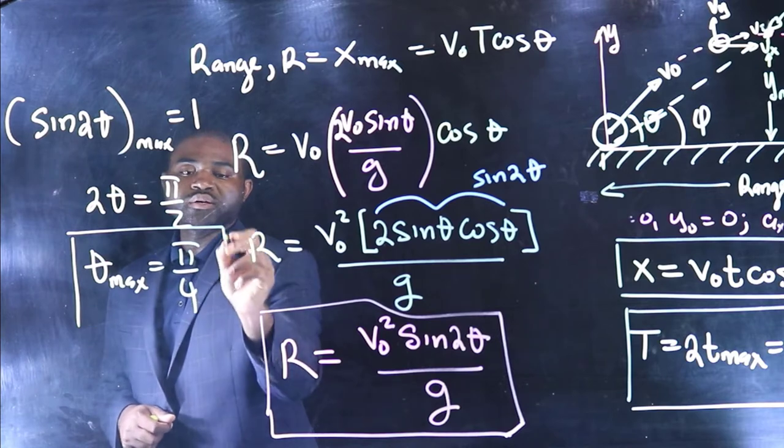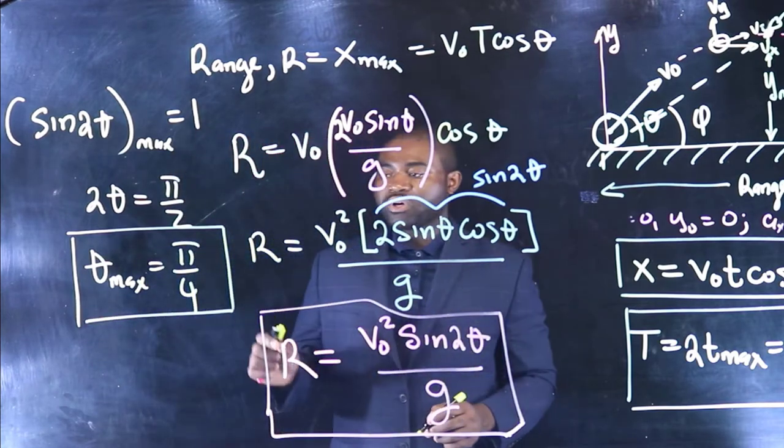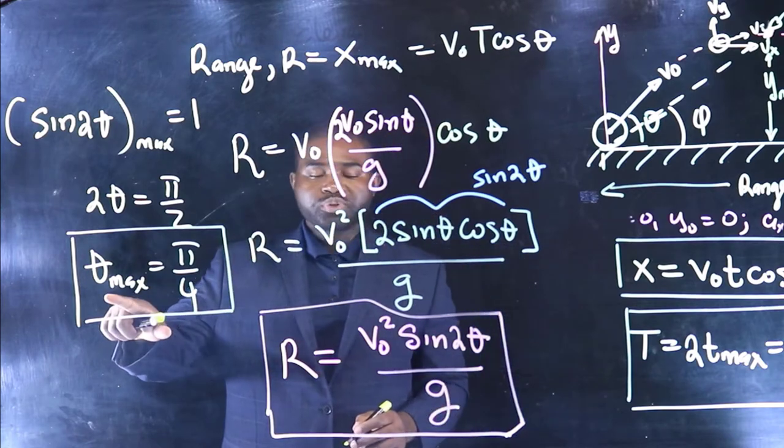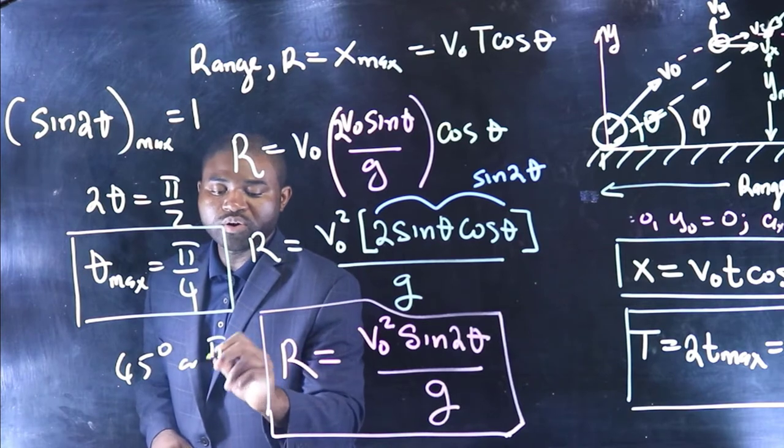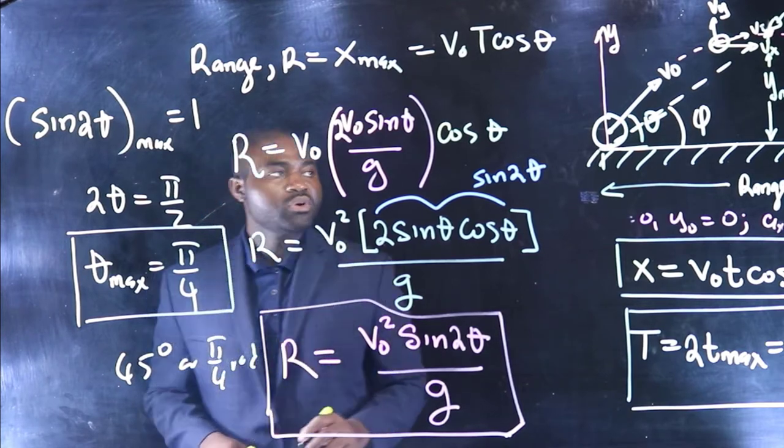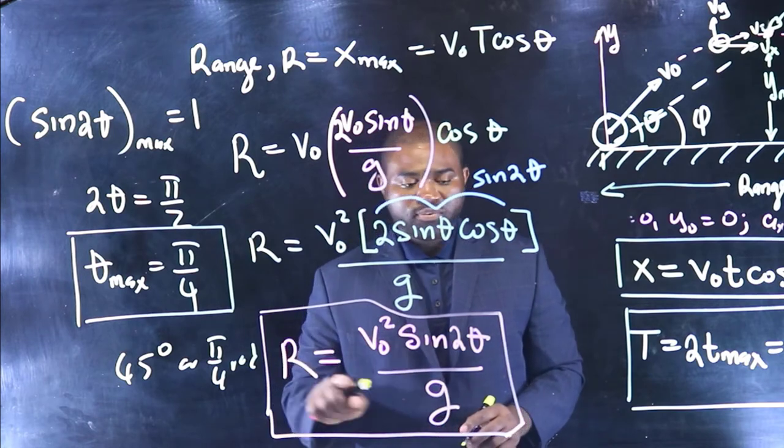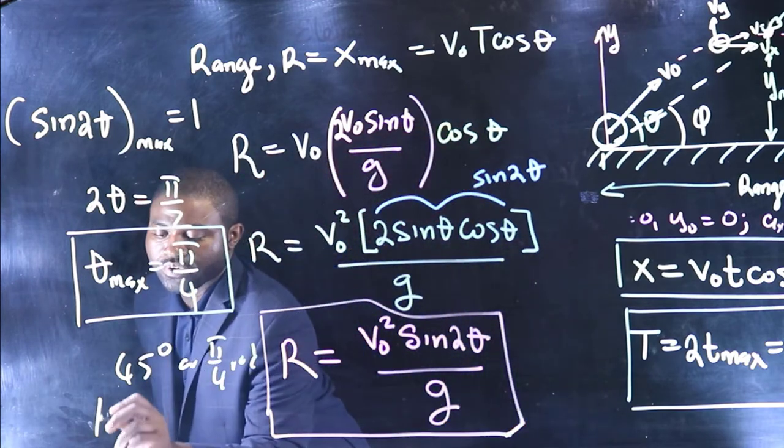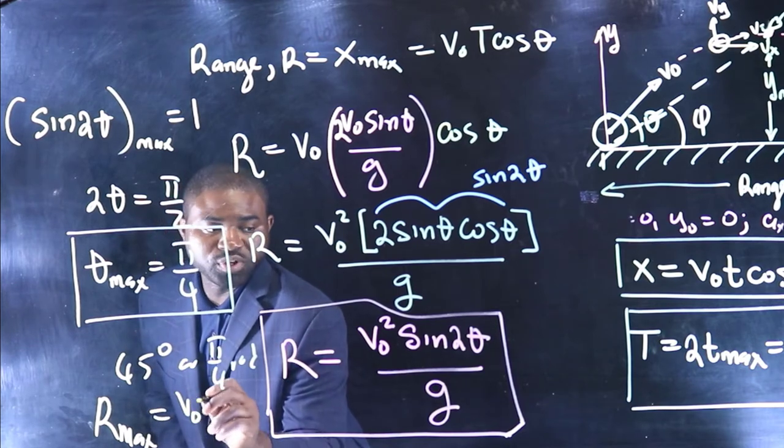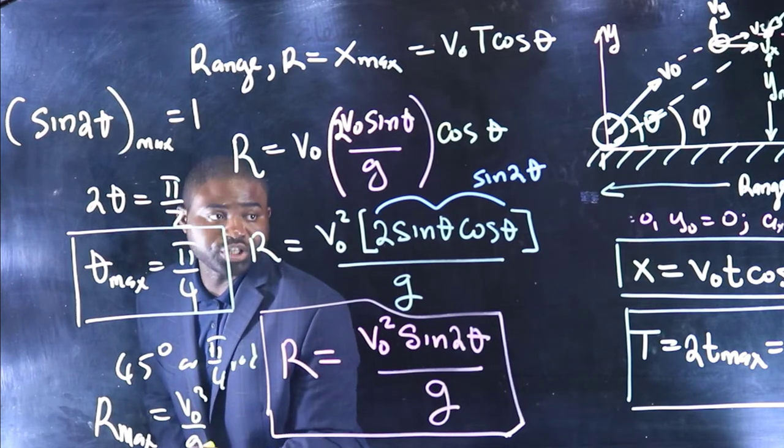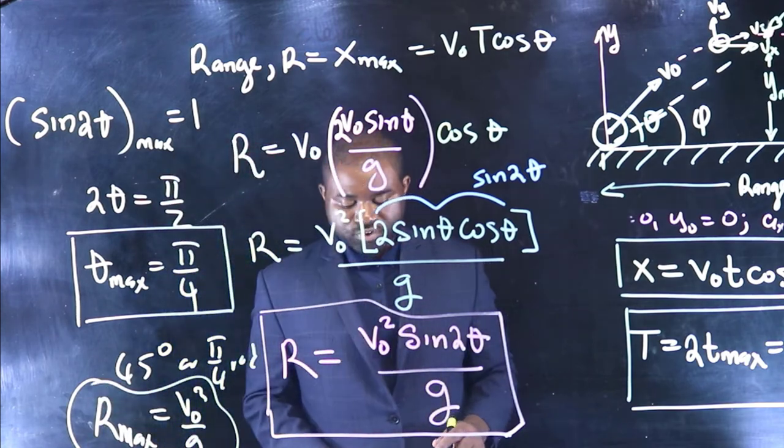So the angle—which means that if you launch the projectile at an angle of 45 degrees or pi over 4 radians, you will get R max, at which point R max is just equal to V naught squared over G.